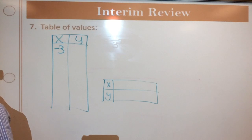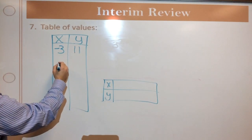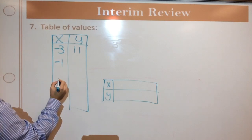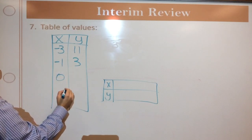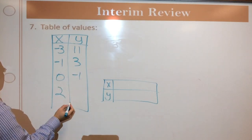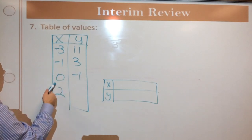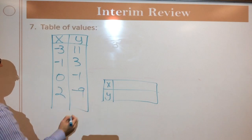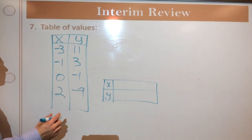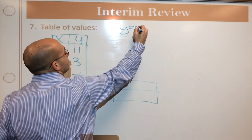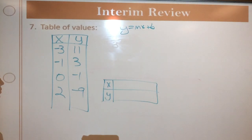Let me give you an x value of negative 3. And if I give you an x value of negative 3, the y value will be 11. And then let's say I give you an x value of negative 1. And the y value will be 3. 0 will be negative 1. And let's just go with 2. So you see how I'm going in order from lowest to greatest? That will be usually how you see this. Now I need you to come up with an equation for this table. Like in slope intercept form. So y equals mx plus b.